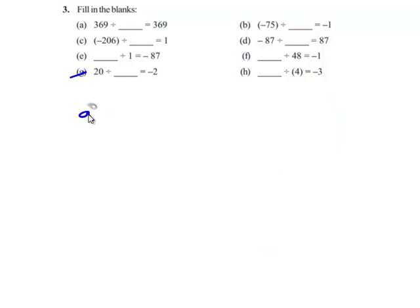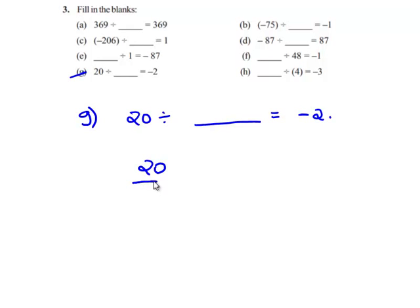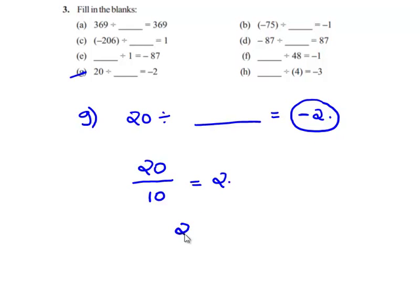This is the next problem. When 20 is divided by some integer, we get the answer negative 2. When 20 is divided by 10, we get the answer 2. But in the answer we can see that we have a negative sign, which implies when we divide two integers having opposite signs, we get a negative sign in the answer. Therefore, when 20 is divided by minus 10, we get minus 2. Therefore, the blank is negative 10.